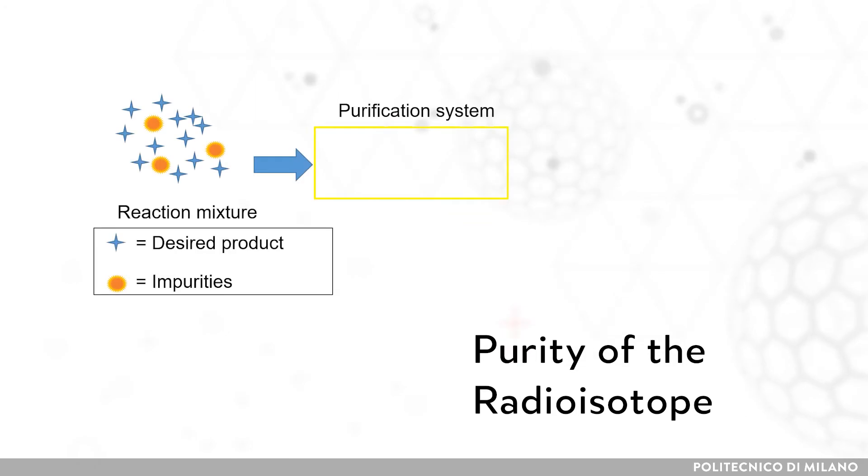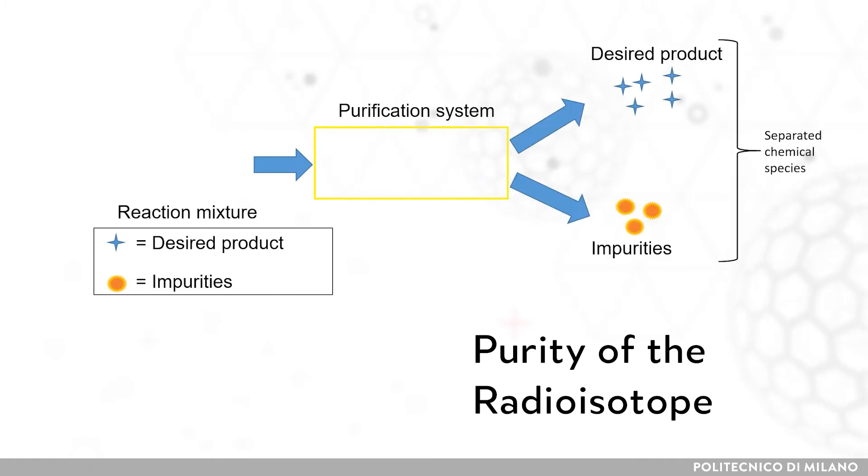Isotopes of the same element are chemically indistinguishable and thus react identically. The physical characteristics are also similar, which makes isotopic separation more challenging.